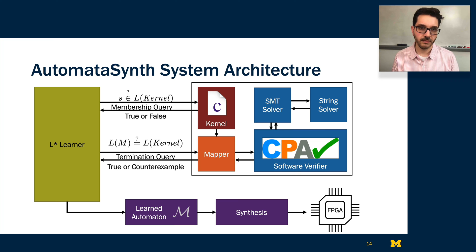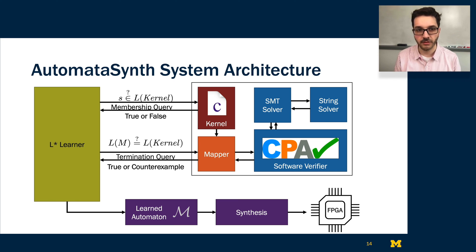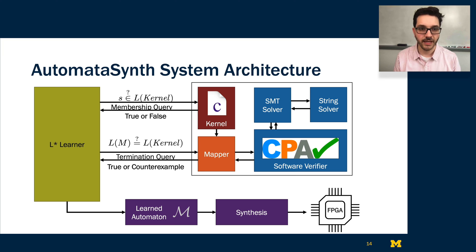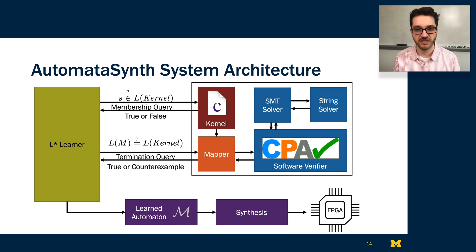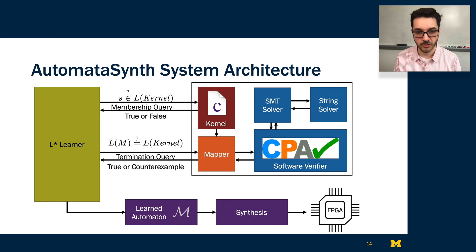Looking at our framework at a high level: we have our L* learner, which asks membership queries that we can answer using the actual source code of the kernel. Eventually, the L* learner will ask a termination query, which we handle by combining the candidate machine provided by L* with our kernel into a software verification task, which we solve using CPA Checker — the follow-on to Microsoft SLAM and BLAST — that we've extended to use a string solver on the back end. Eventually, L* can output a learned automaton, which we pass through various synthesis techniques such as the Reaper framework for generating FPGA hardware descriptions.